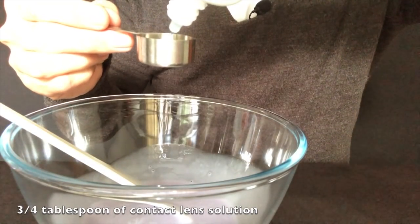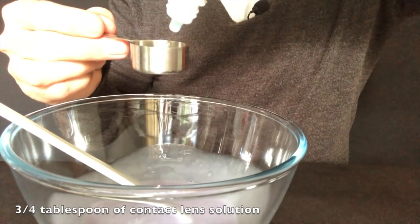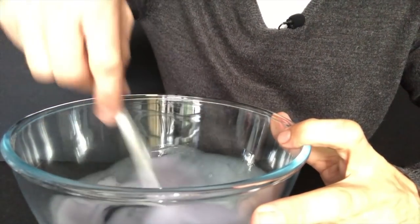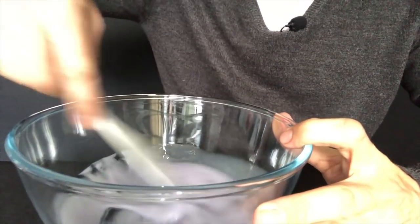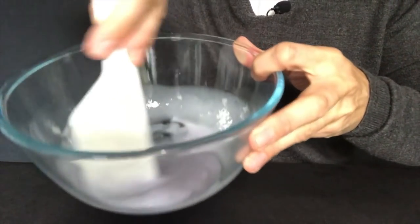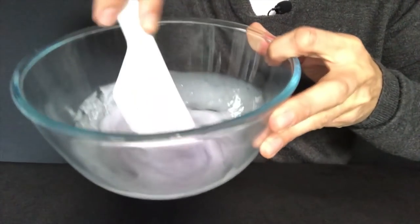And then we need to add about three quarters of a tablespoon of contact lens solution, and then mix the contact lens solution in with the rest of the slime until it starts to come away from the side of the bowl.